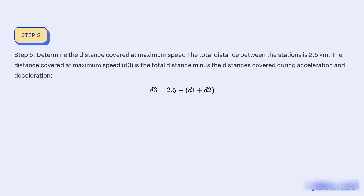Step 5: Determine the distance covered at maximum speed. The total distance between the stations is 2.5 km. The distance d3 covered at maximum speed is the total distance minus the distances covered during acceleration and deceleration: d3 = 2.5 − (d1 + d2).